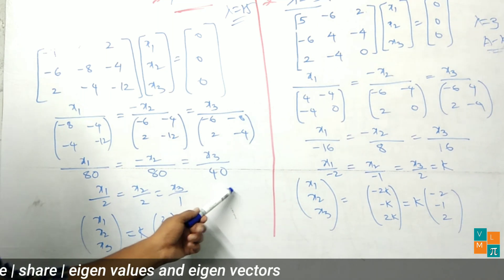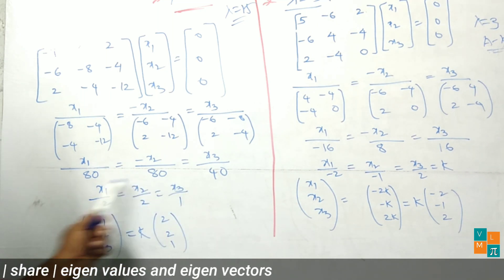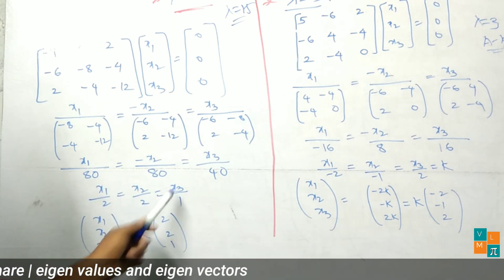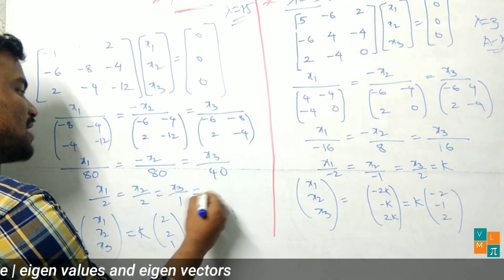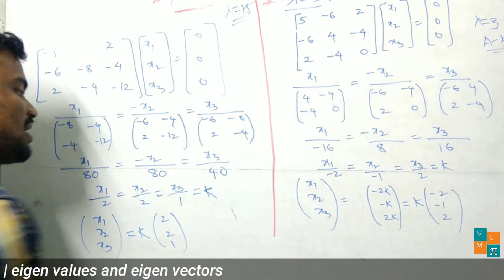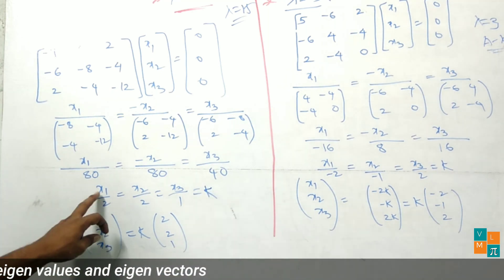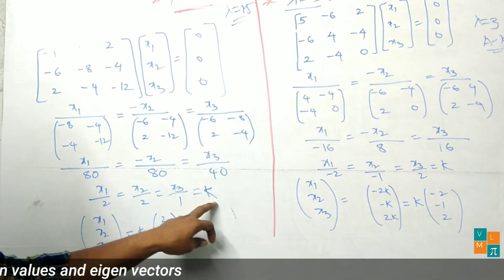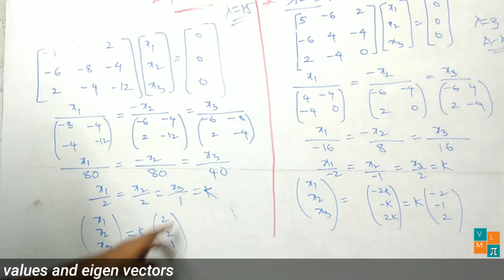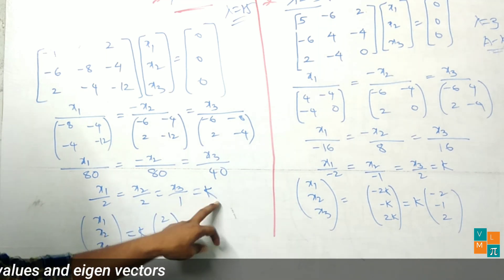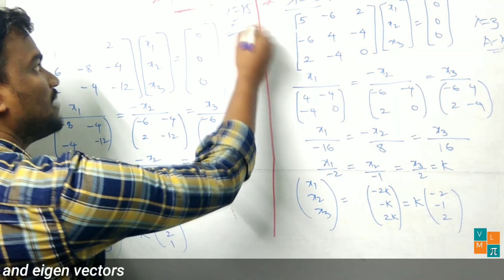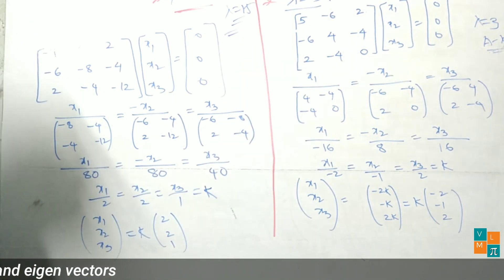Dividing by 40: x1 by 2, x2 by 2, x3 by 1, all equal to constant k. Therefore x1 equals 2k, x2 equals 2k, x3 equals k. Taking k common, the eigenvector is [2, 2, 1]. This is the eigenvector corresponding to eigenvalue lambda equals 15.